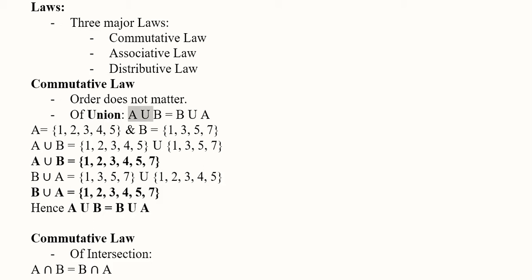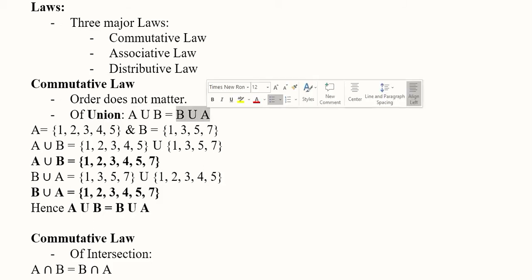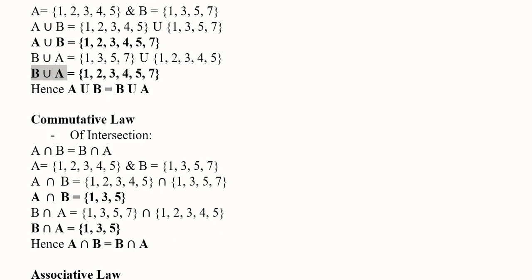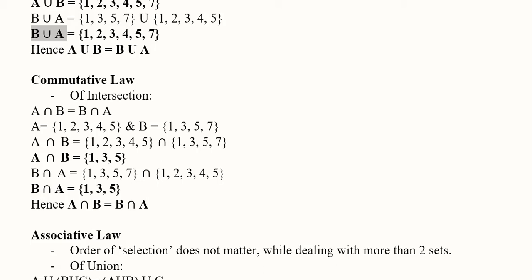Let's talk about union first. If we take the union of A and B, and if we calculate it for B and A, the order is reversed but the answer will be the same. In this numerical example, we write the elements once — no matter if they appear twice or once — usually in ascending order. So writing elements once in ascending order makes the result the same whether you compute A∪B or B∪A. This is how union satisfies the commutative law.